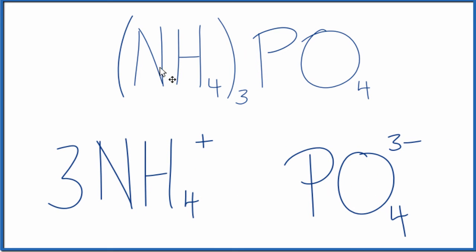So when we talk about the number of ions in (NH4)3PO4, this ammonium phosphate, we have three ammonium ions. Each one is one plus. And then we have one phosphate, and that whole thing has the charge of three minus.